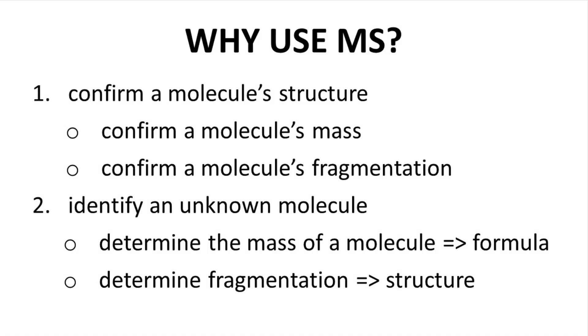The first reason you might need a mass spectrum of a molecule would be to confirm a molecule structure. Let's say you just made a molecule in lab. You are fairly certain you know the structure of the product. You just want to gather some evidence to confirm that the molecule is what you think it is. Running an MS on the sample would be perfect. You can make sure that the mass of the molecule matches your expectations. You can make sure that the fragmentation of the molecule matches your expectations.